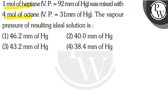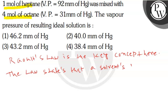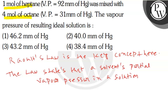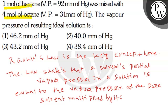The key concept here is Raoult's Law. The law states that a solvent's partial vapor pressure in a solution is equal to the vapor pressure of the pure solvent multiplied by its mole fraction.